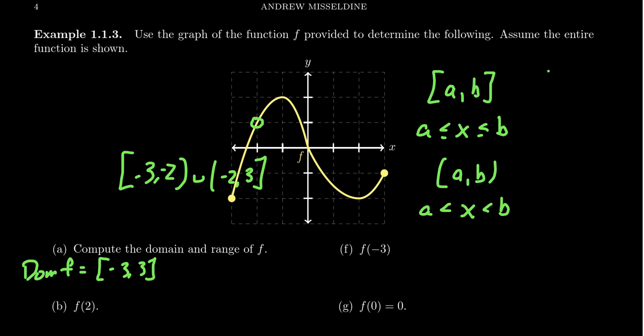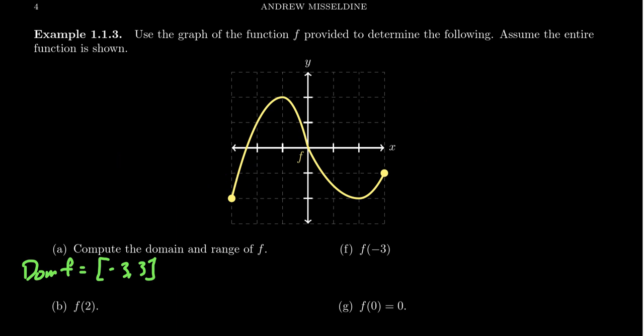You, of course, can mix and match. You could do something like parenthesis A comma B bracket which would mean that x is strictly greater than A but less than or equal to B. You can have this half open, half closed interval. That's a possibility. And then you also have this union symbol where you can glue together disjoint intervals. Now, our example doesn't have any gaps or holes in it. So, we get one continuum of points. We get x from negative 3 to positive 3 inclusive. So, this is the domain.